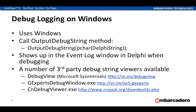On Windows, you call OutputDebugString — that method is in the Windows unit. That shows up in the Event Log window in Delphi when you're debugging your application. If you're not debugging, there are a few other utilities: GExperts, CnPack, and DebugView from Microsoft. All these utilities grab everything written to OutputDebugString. Most of these utilities offer you the ability to filter that information so you can just get your logs, because any app on the system writing to OutputDebugString will show up in those third-party log viewers.